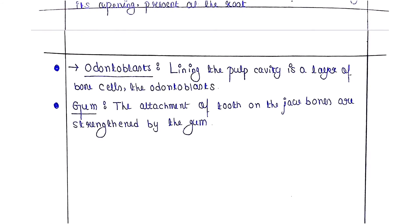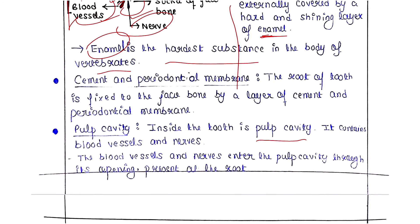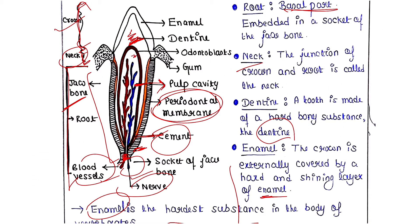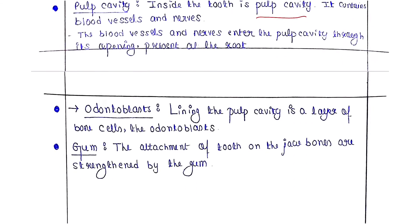Next are the odontoblasts. The lining of the pulp cavity is made of a large layer of bone cells called odontoblasts. These are cells that surround and line the pulp cavity.